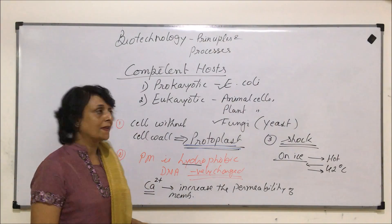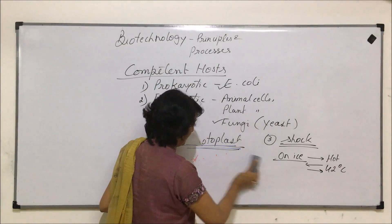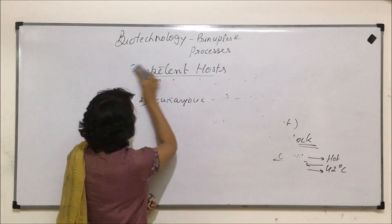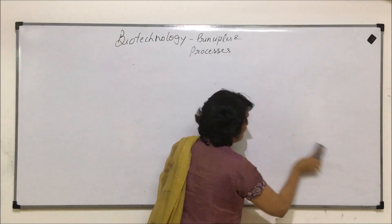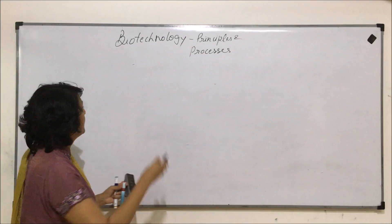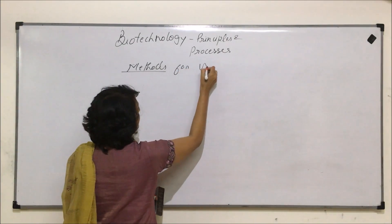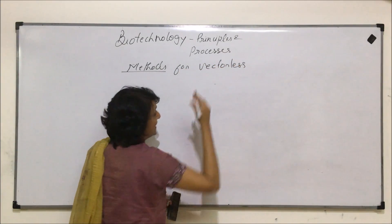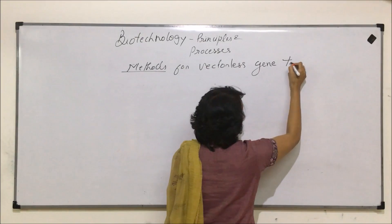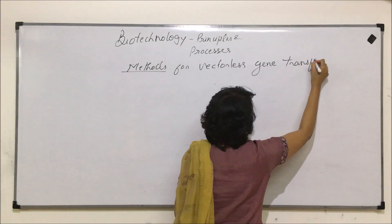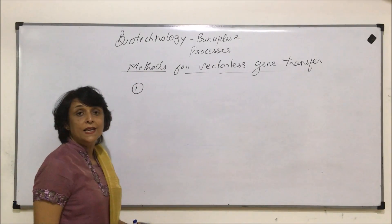Now let us talk about certain methods by which we can introduce our insert without a vector — methods for vector-less gene transfer. We are not using any carrier or vector. There are four methods which we normally use. The first is a chemical method.